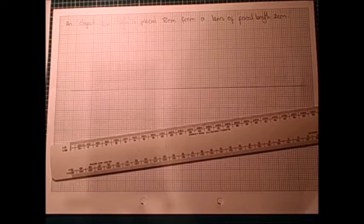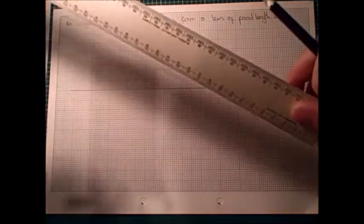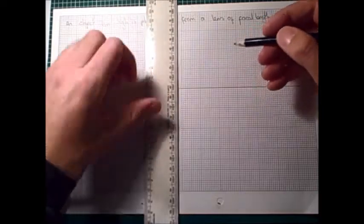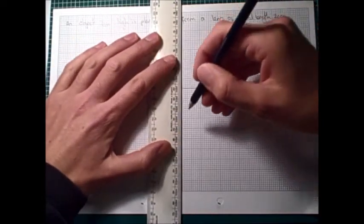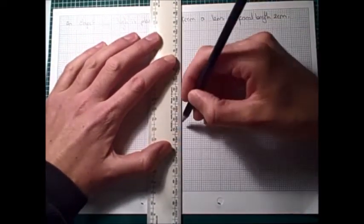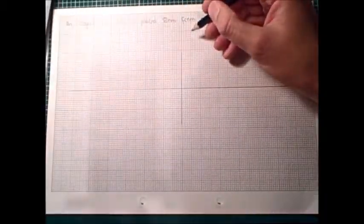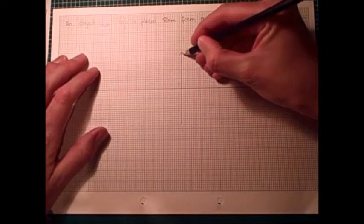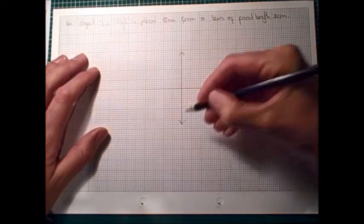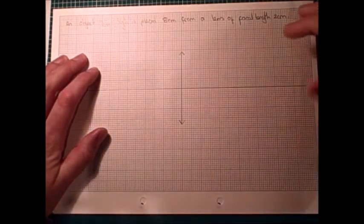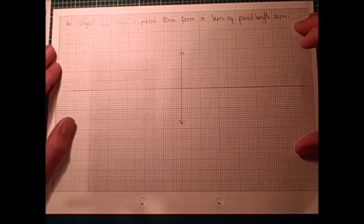Second job is to draw in the lens. Now I'd always go for doing this right in the middle of the page, and then it gives you space to work on either side. And as we've got a converging lens, we should draw it with a symbol of two arrowheads like that, which sort of shows the shape of a converging lens.